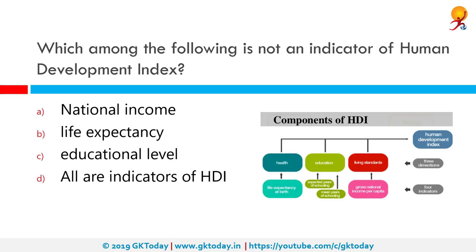Which among the following is not an indicator of the Human Development Index? The correct answer is the co-existence of private and public sector. The Human Development Index is a composite statistic of life expectancy, education and per capita income indicators, used to rank countries into four tiers of human development. National income does not figure into it.